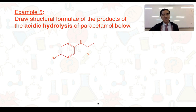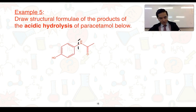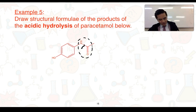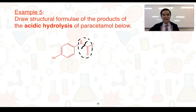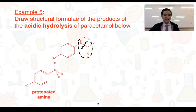For example five, draw the structural formulae of the products of the acidic hydrolysis of paracetamol, shown below. First, identify the amide functional group, then identify the carbon-to-nitrogen bond that will break. To the right, the section with a C-to-O double bond forms our carboxylic acid. To the left, this section of the molecule forms a protonated amine. The first product is the protonated amine, and the second product is the carboxylic acid.